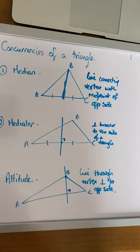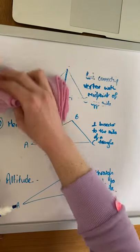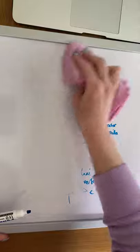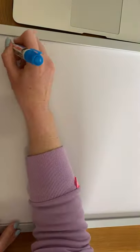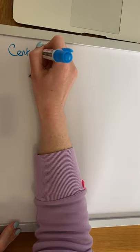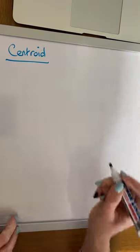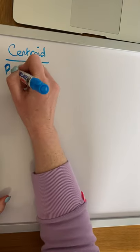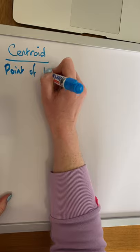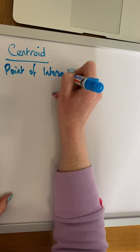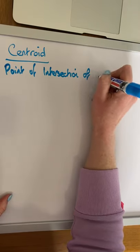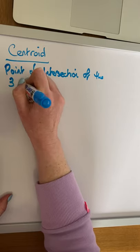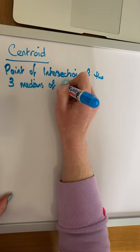Knowing these three pieces of information, we need to look at how to find — both graphically and algebraically — the centroid, the circumcenter, and the orthocenter of a triangle. First, we're going to look at the centroid. The centroid of a triangle is the point of intersection of the three medians of a triangle.